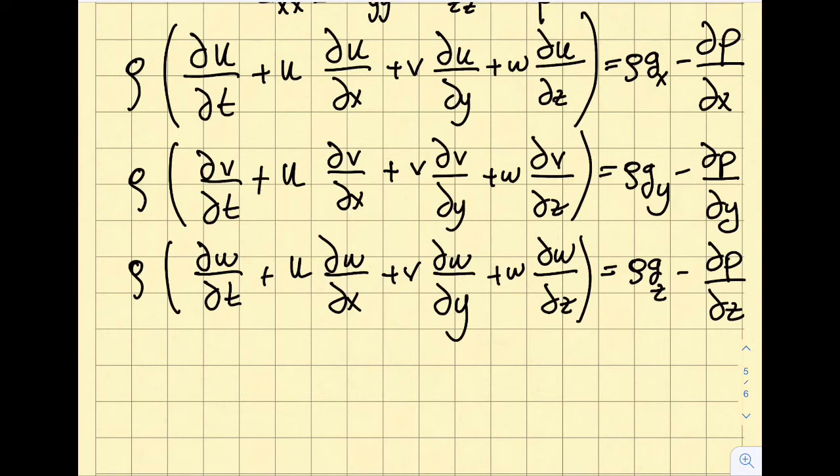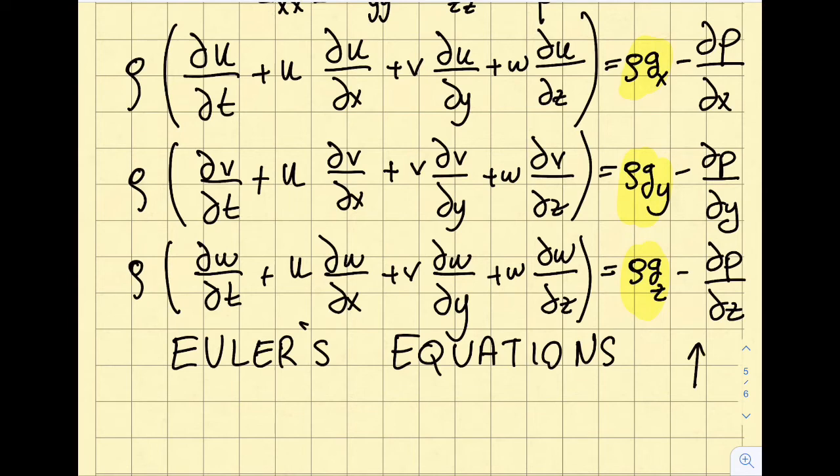These three equations are commonly known as Euler's equations. They are based on the conservation of momentum equation we derived. On the right-hand side you can see ρgx, ρgy, ρgz - these are the body forces per unit volume. Most of the time at least two of these will be equal to zero.